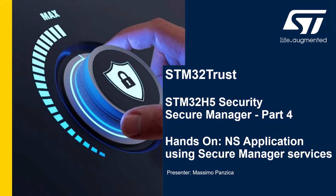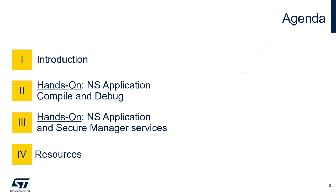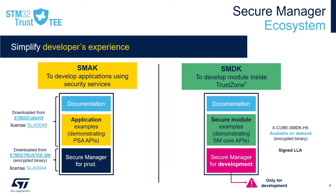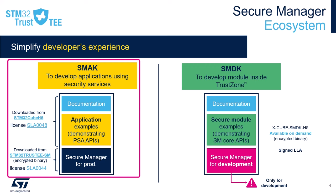In this new session, we are going to show how to easily build and debug a non-secure application that is going to use the security services of the Secure Manager that we have just installed on our device. As mentioned by my colleague Mina in part 1, the Secure Manager comes with two types of packages: the Secure Manager Access Kit, SMAK, and the Secure Module Development Kit, SMDK. The SMAK is used to develop non-secure applications using Secure Manager security services via PSA APIs.